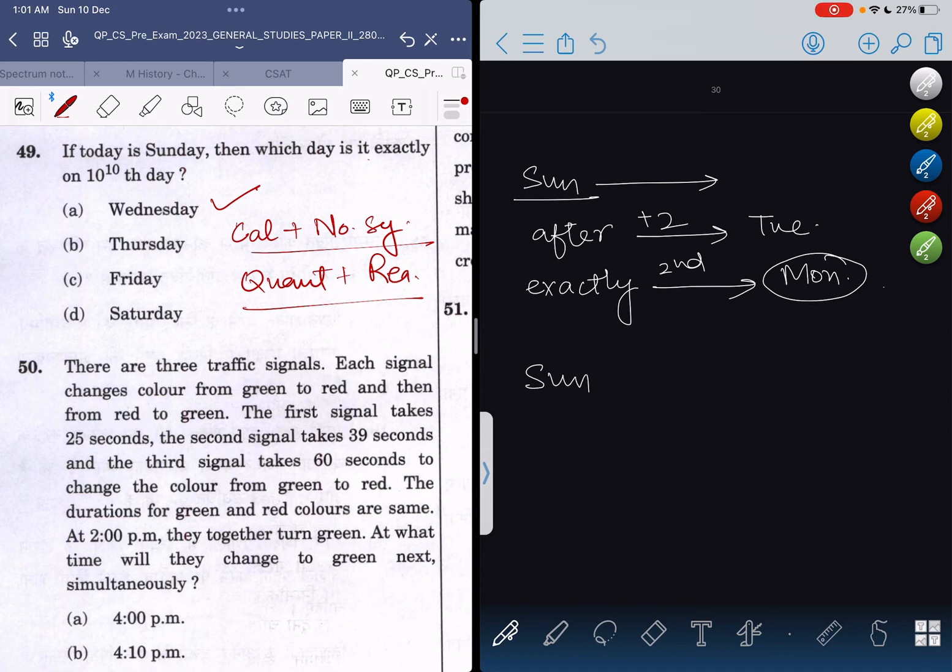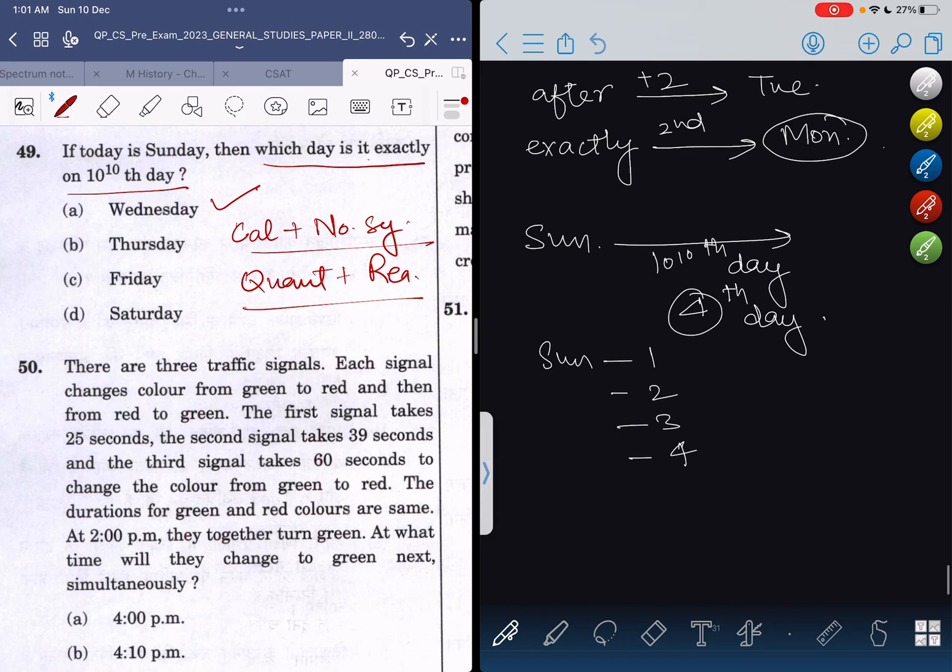Similarly, if today is Sunday and the question asks which day is it exactly ON the 10^10th day, we know that 4 is the odd number, and it's asking about the fourth day. So the first day is Sunday, second day is Monday, third day is Tuesday, and the fourth day is Wednesday.